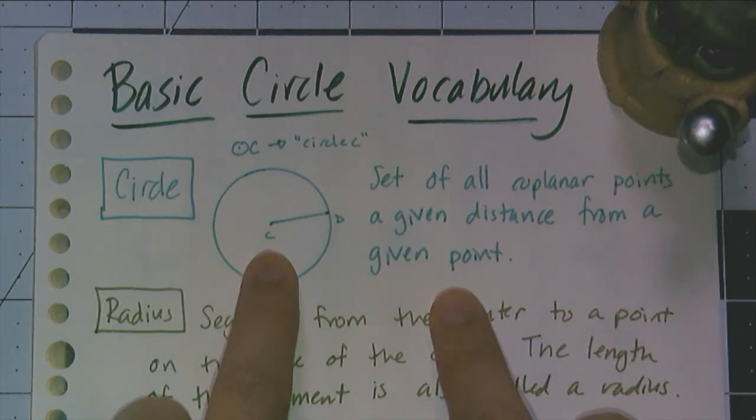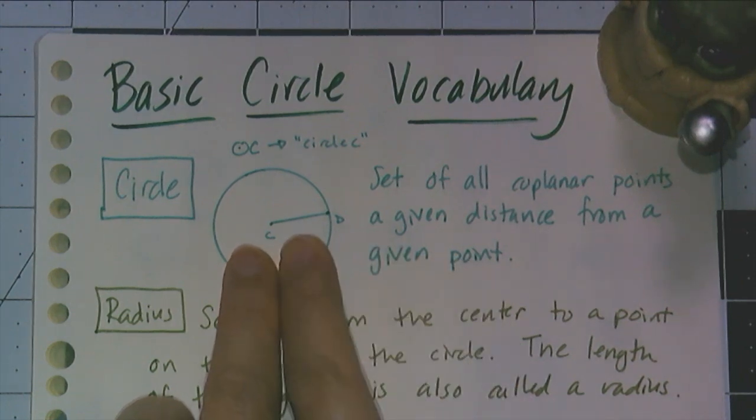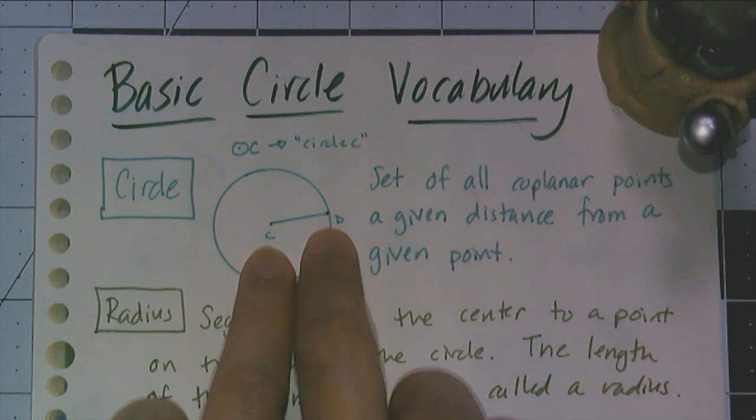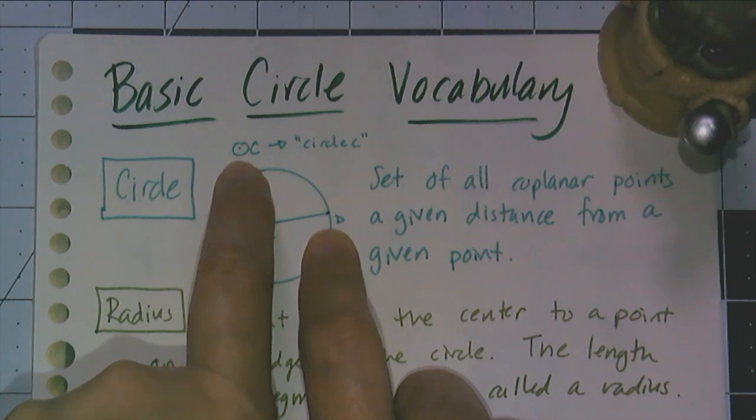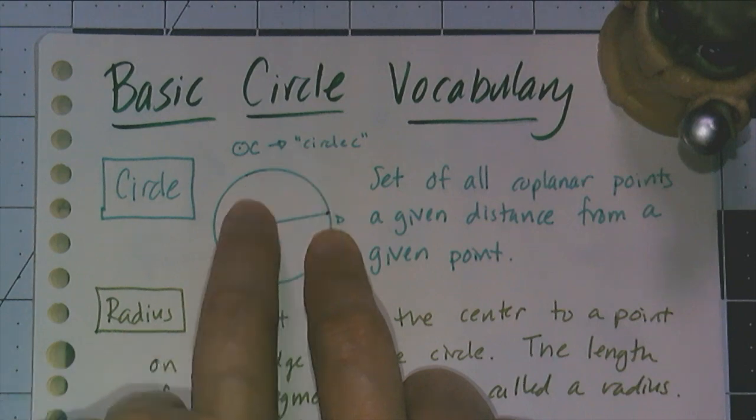The given point is the center of the circle, which I have labeled C, and that distance is the length of that line segment CD. The shorthand way for circle C is to make a little circle with a dot in the center and name it by its center, and we call this circle C.